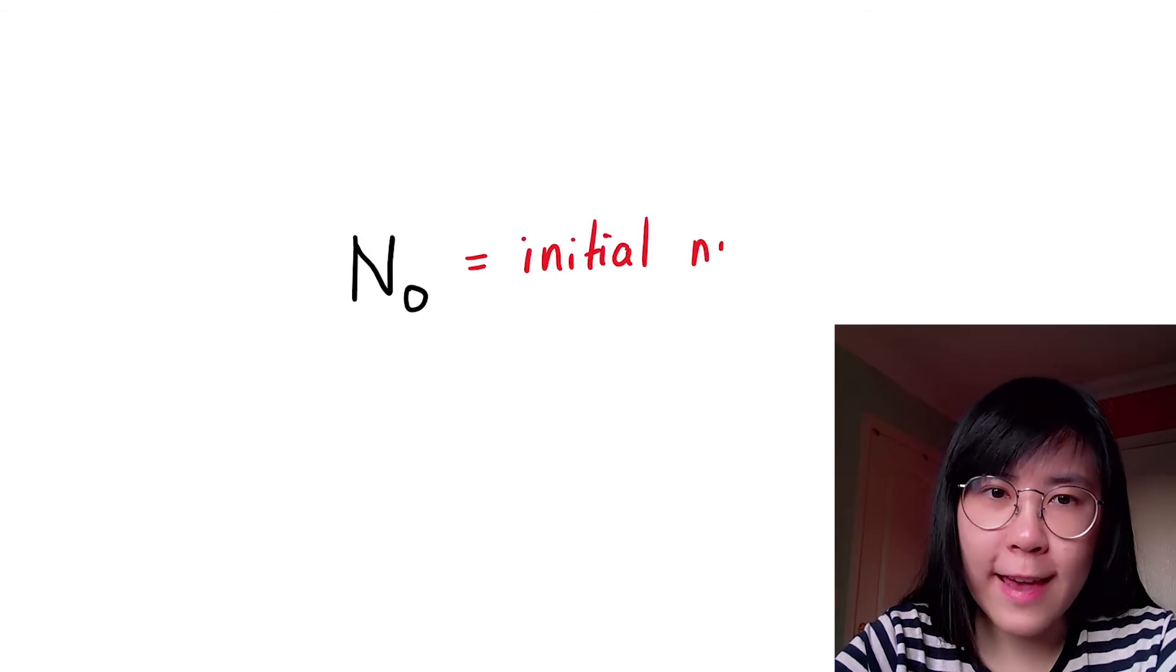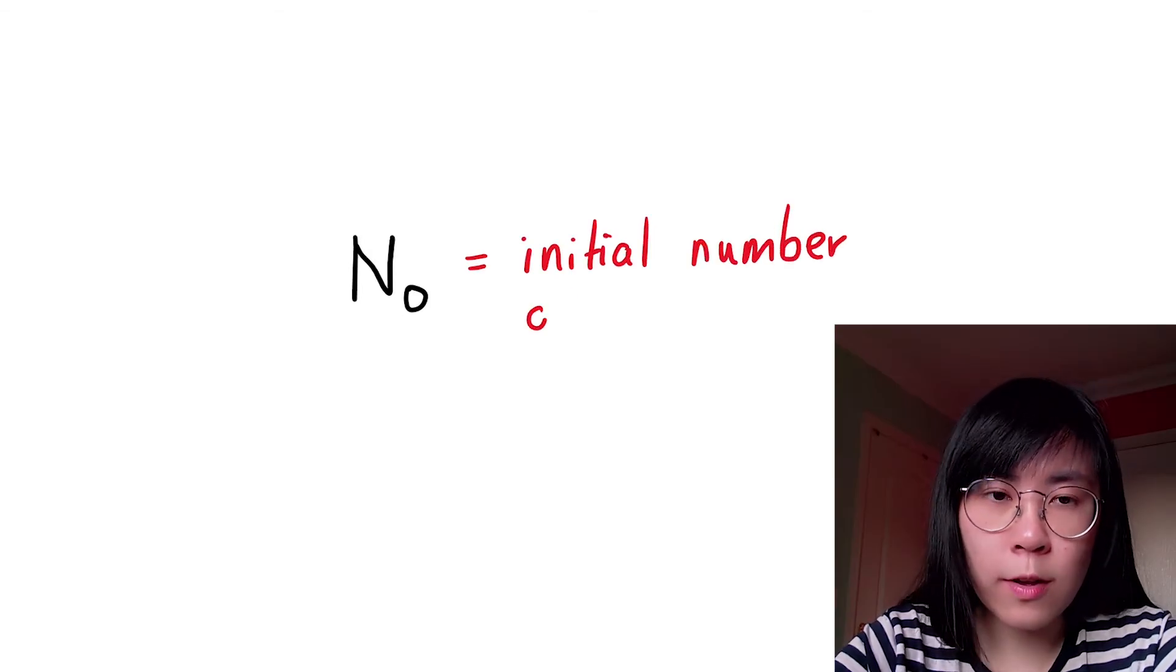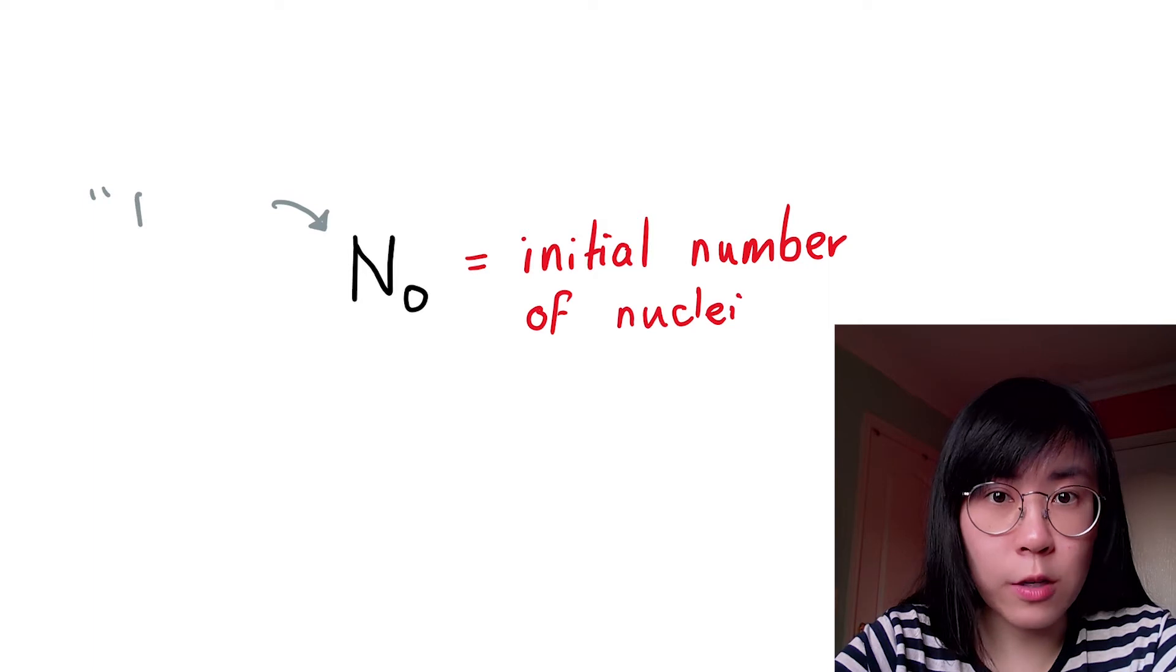And at that instant in time we have the maximum number of undecayed radioactive nuclei. So let's call this N subscript zero. This is the initial number of nuclei that we have.